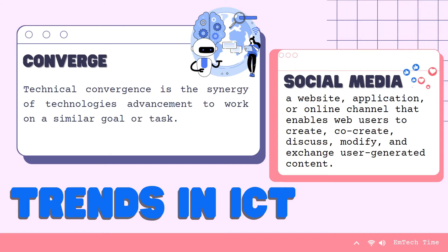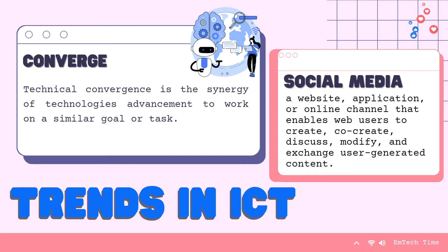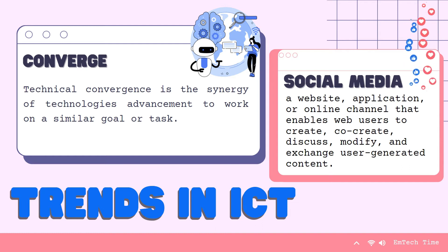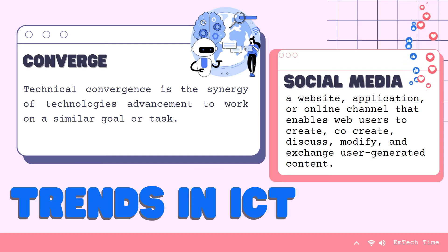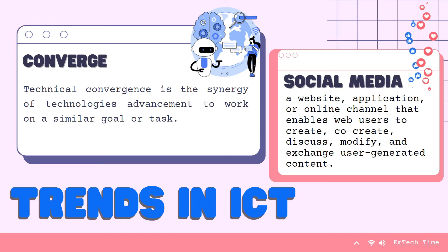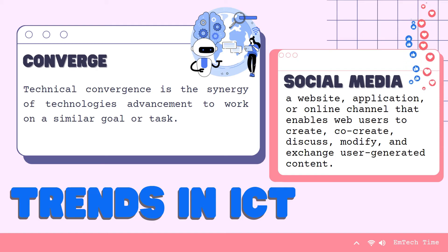The first trend in ICT is convergence. Technological convergence is the synergy of technological advancements to work on a similar goal or task. Social media is a website, application, or online channel that enables web users to create, co-create, discuss, modify, and exchange user-generated content. The types of social media include social networks, bookmarking sites, social news, media sharing, micro-blogging, blogs, and forums.